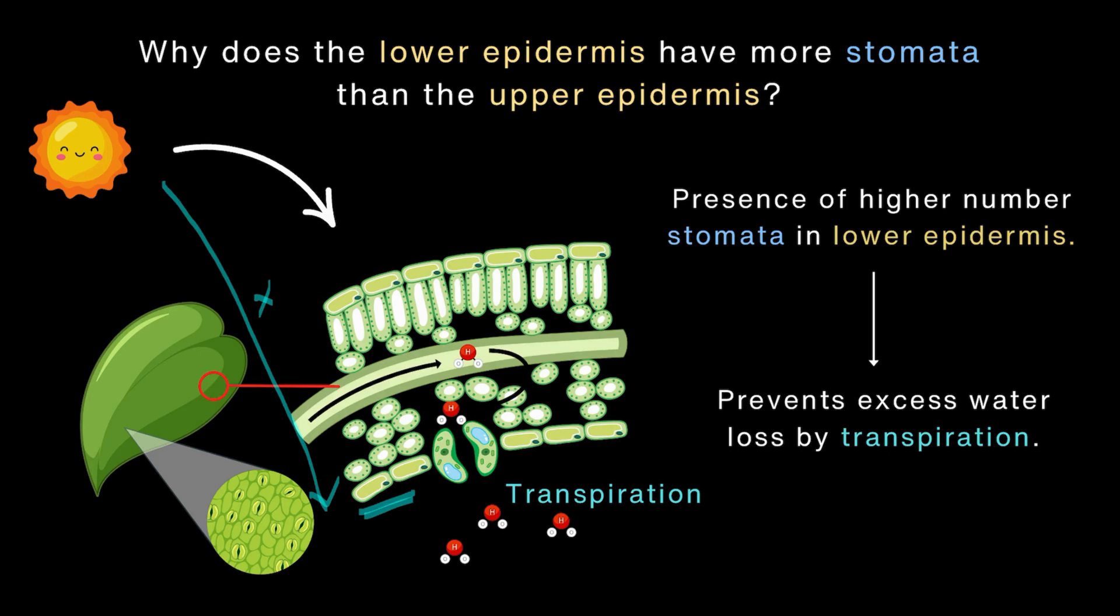So, it is much cooler and shadier here. And stomata are smartly placed in the lower epidermis to prevent excess loss of water by transpiration.